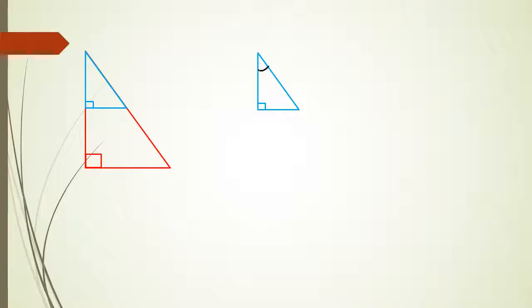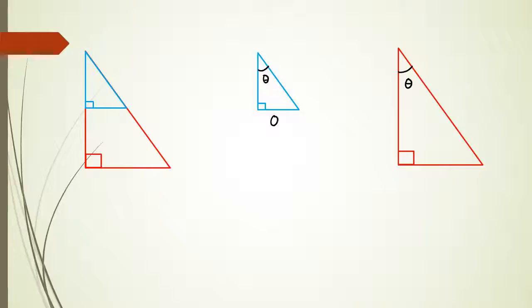So let's take the first, the blue triangle. Let's say this is angle theta. And then we've got the red triangle. We can say that the red triangle also has the same angle as the blue triangle, so we can actually say that's also angle theta. Now, the blue triangle — I'm looking at this side here. This is the opposite side of the blue triangle, I'm going to call it OB. And this is the adjacent side, which is going to be AB.